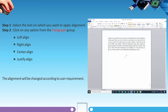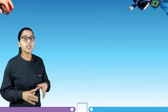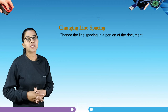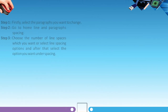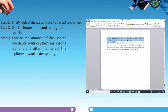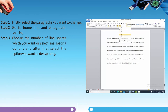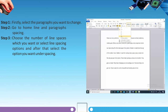Let's jump to our next topic — changing line spacing. To change line spacing in a portion of the document: Step one — select the paragraph you want to change. Step two — go to Home, then Line and Paragraph Spacing. Step three — choose the number of line spaces you want, or select Line Spacing Options, then select the option you want under Spacing.